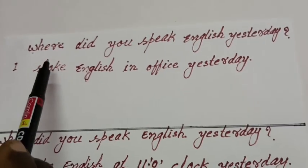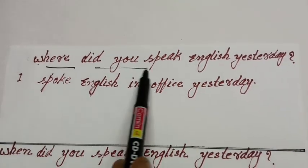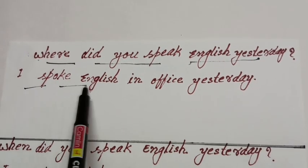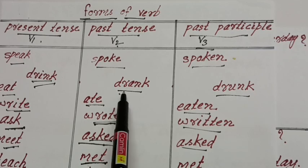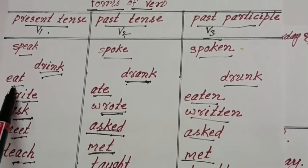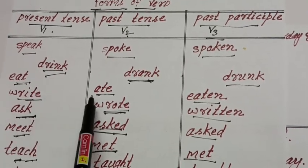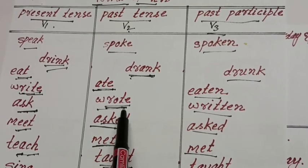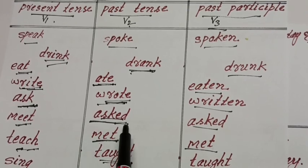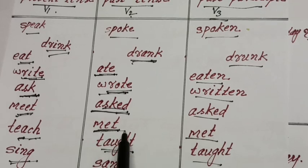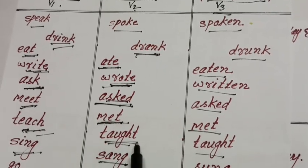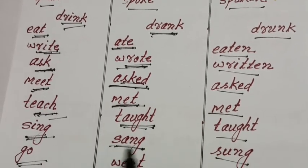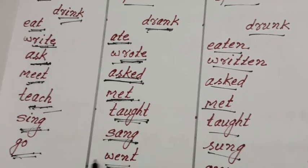Here I am taking the WH question on 'where'. Where did you speak English yesterday? I spoke English in the office yesterday. Where did you drink water yesterday? I drank water on the road yesterday. Where did you eat rice last year? I ate rice in a hotel last year. Where did you write the examination? I wrote the examination in Delhi. Where did you ask the question? I asked the question on the road. Where did you meet your friend? I met my friend in the office. Where did you teach Telugu? I taught Telugu in front of people. Where did you sing a song? I sang a song on the road. Where did you go? I went to a marriage.